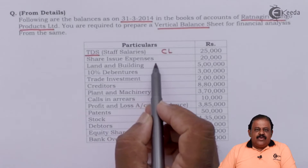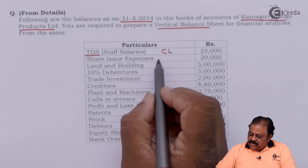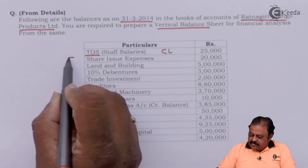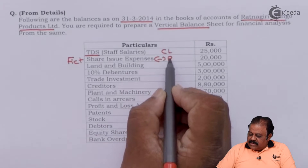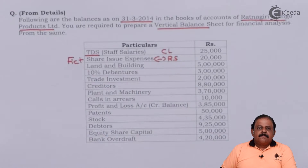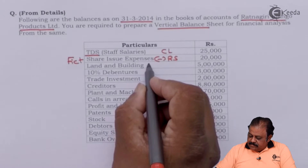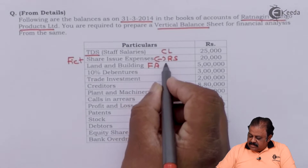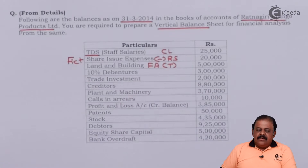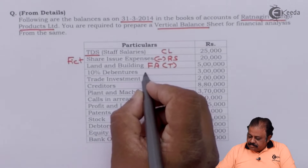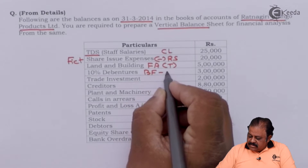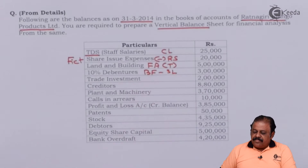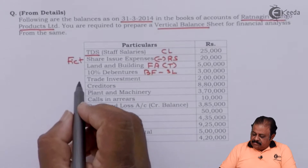Share issue expenses is a fictitious asset. It will be deducted from reserves and surplus. Land and building is a fixed asset — tangible. 10% debentures will be part of borrowed funds.